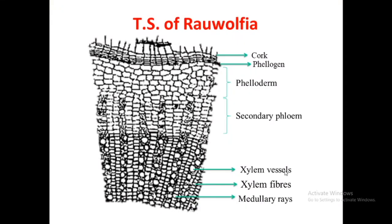Now see the transverse section of Rauwolfia root. This transverse section can be divided into three different zones. First is periderm, which contains cork, phellogen and phelloderm. Second is the secondary phloem. Third is secondary xylem. The secondary xylem contains xylem vessels, xylem fibers and medullary rays.